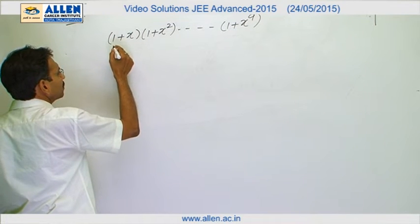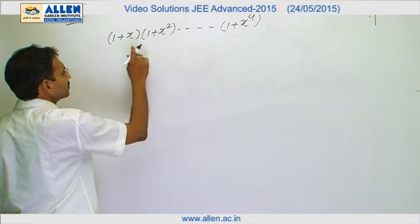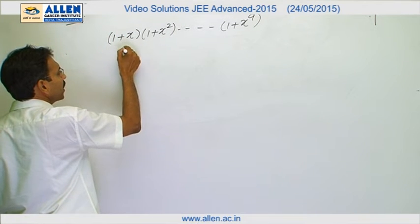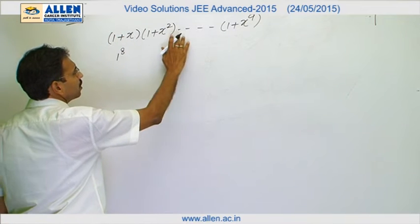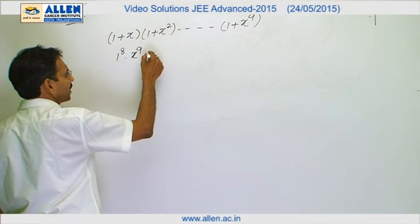First instance in which we will have x power 9 is 8 factors will contribute 1. One of first 8 factors will be multiplied to the x power 9 of last factor.